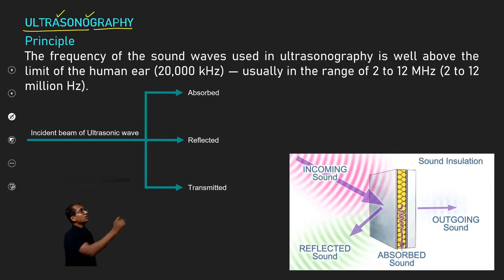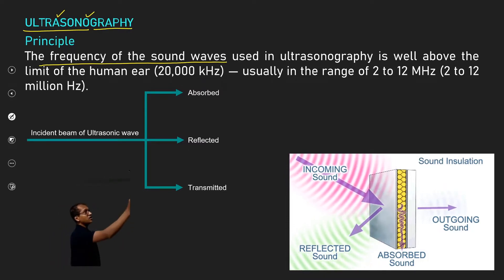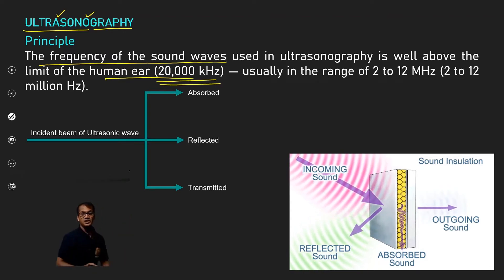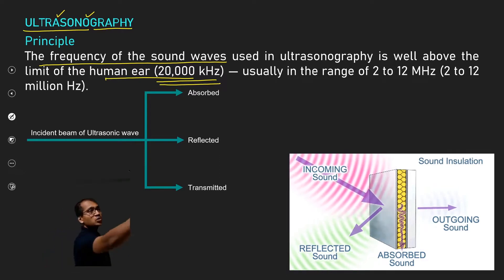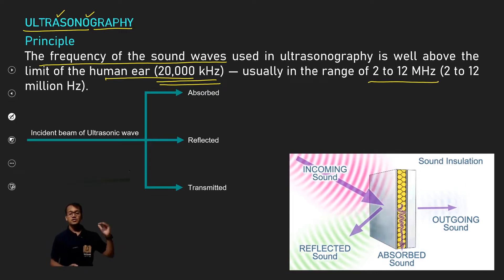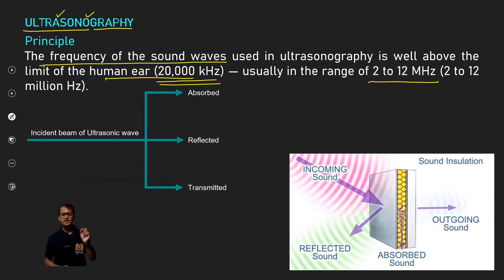The principle is that the frequency of the sound waves used in ultrasonography is above the limit of human hearing, that is 20,000 hertz. Usually, 2 to 12 megahertz — that is 2 to 12 million hertz — is the high frequency sound wave used in ultrasonography.